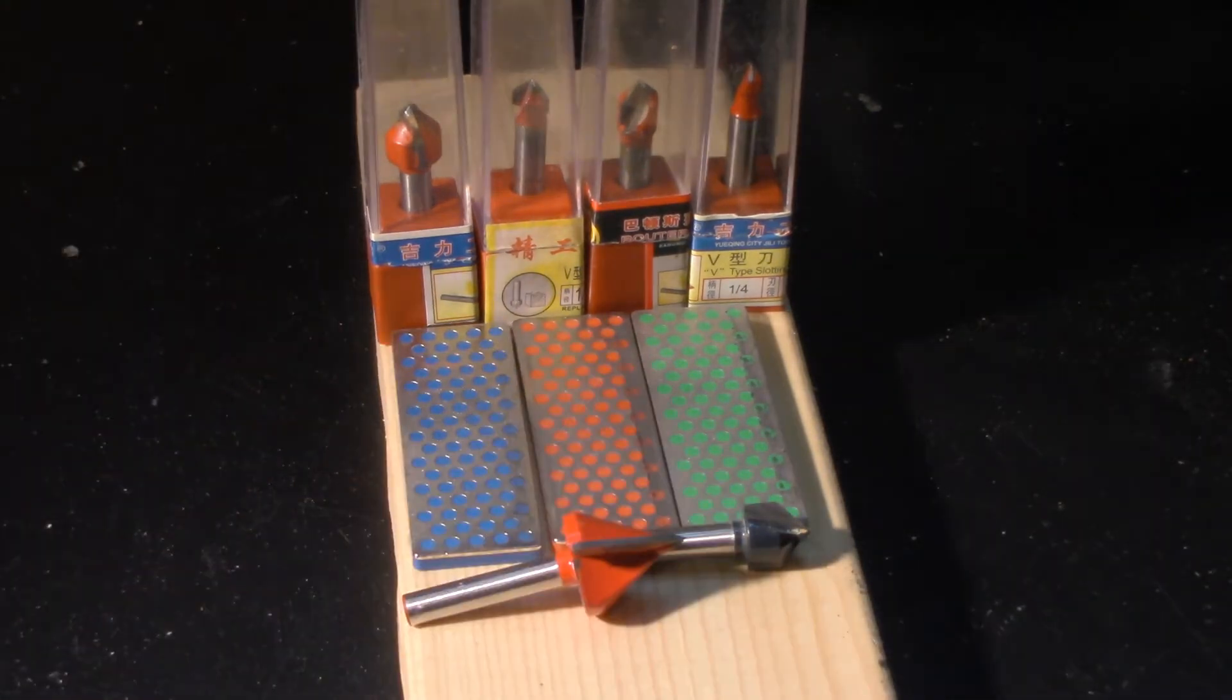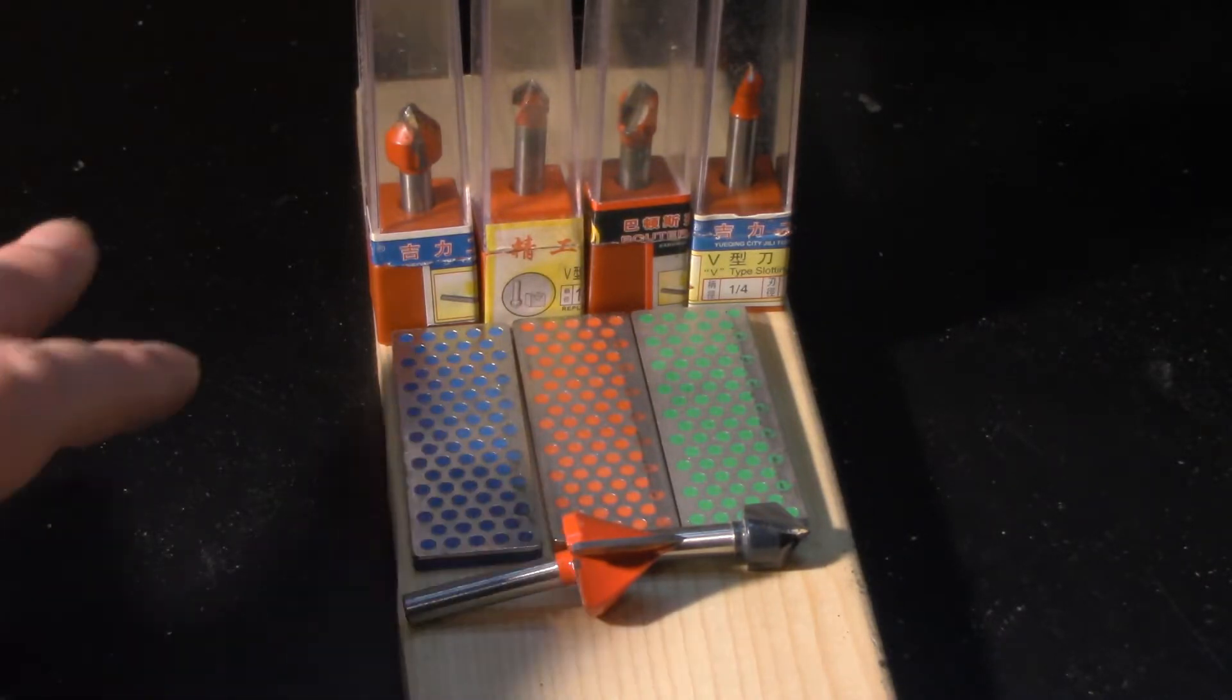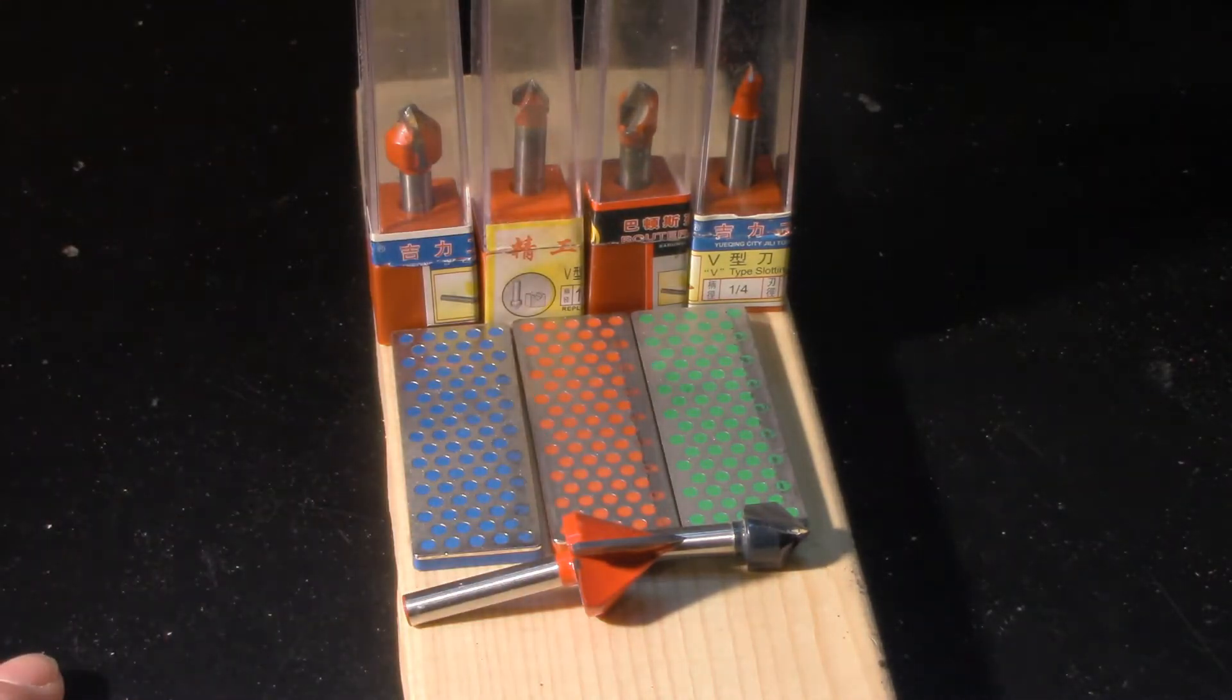But these are my main six V-bits here. More or less, the front two are my ones that I use all the time. So I still have a bit of cleanup to do on these back ones. They're pretty gummy, so I'll clean them up a little bit more, but I'll wait until I get the dry lubricant spray for saw blades and tool bits.